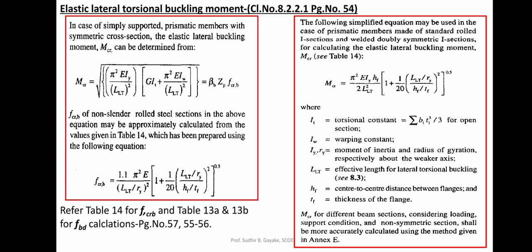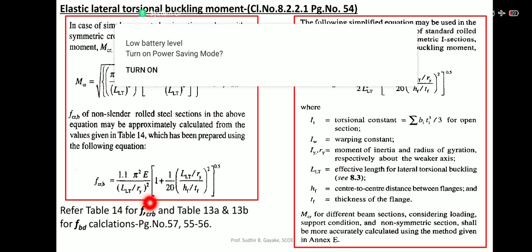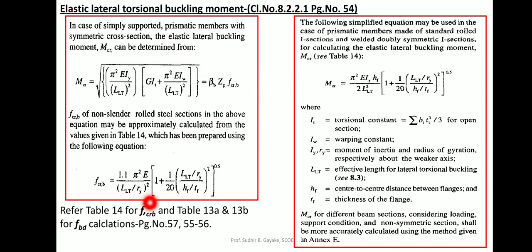Just as in compression member design where fcd is obtained directly from Tables 9a to 9d based on buckling class, here either you follow the numerical process for fbd calculation or directly refer to the relevant tables. For fcrb calculation, refer to Table 14; for fbd calculation, refer to Table 13a or 13b.